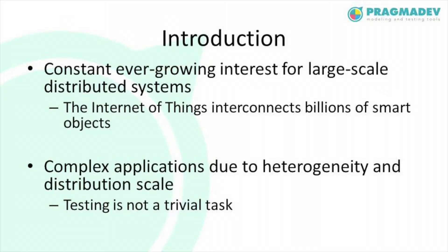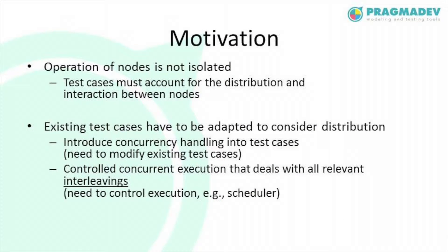With a constant and growing interest in large-scale and distributed systems, there is a need for more complex applications that can run on heterogeneous and highly distributed infrastructures. One of the most common examples is the Internet of Things, which interconnects billions of smart objects. In such highly distributed infrastructures we have millions or billions of nodes, and their operation is not isolated — we are speaking about systems of nodes that interact with one another.